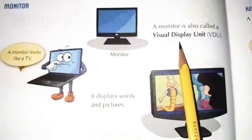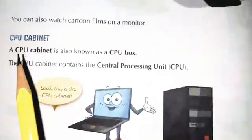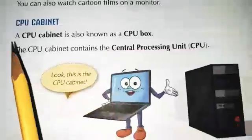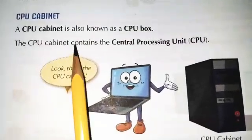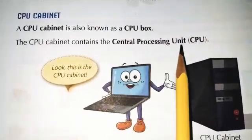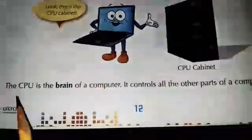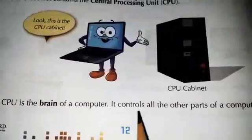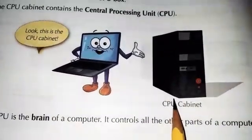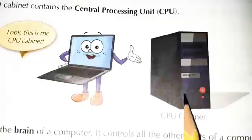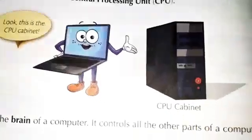You can also watch cartoon films on a monitor. Tell me, what is the other name of a monitor? — Visual Display Unit. Now, the CPU cabinet is also known as the CPU box. The CPU cabinet contains the Central Processing Unit. The CPU is the brain of a computer; it controls all the other parts. Without the CPU, a computer doesn't work.